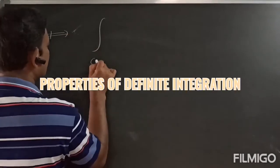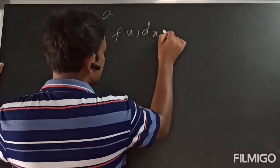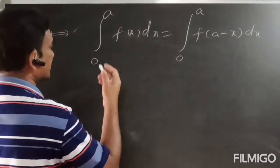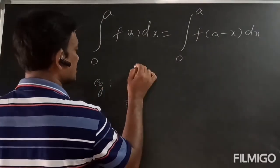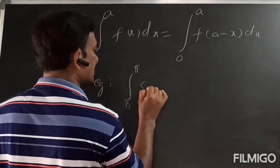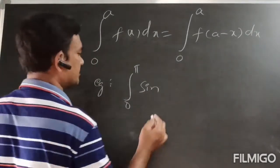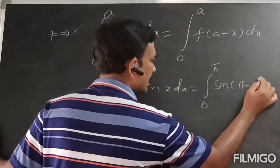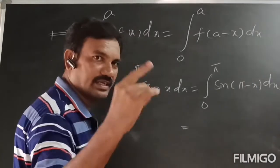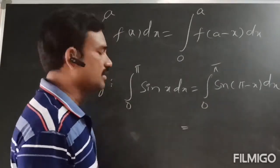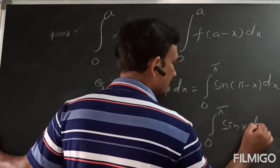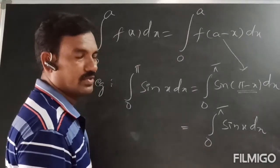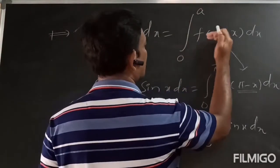A consecutive property from the fourth: integration 0 to a of f(x)dx is equal to integration 0 to a of f(a-x)dx. Example: integration 0 to π of sin(x)dx equals integration 0 to π of sin(π - x)dx. Since sin(π - x) equals sin(x) — it is in the second quadrant where sine is positive — both integrals are the same.